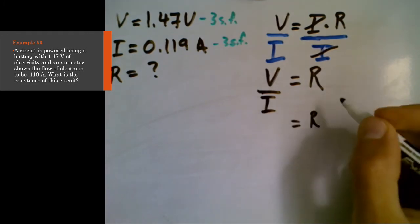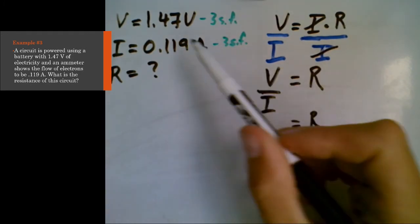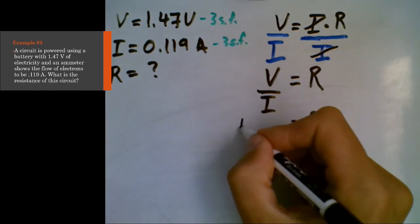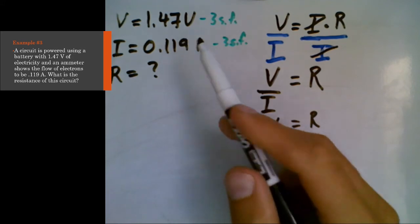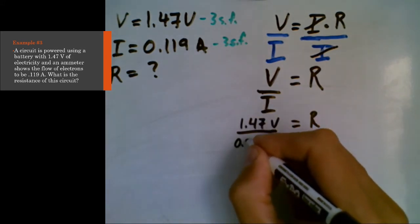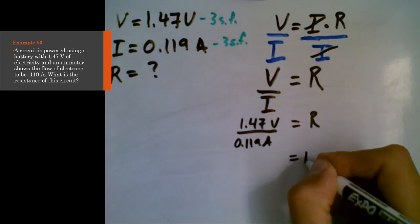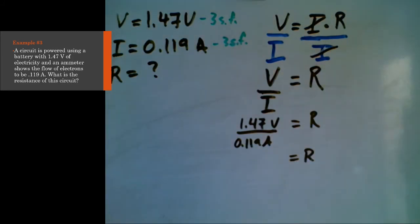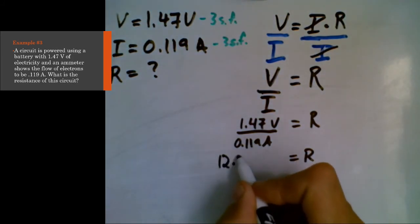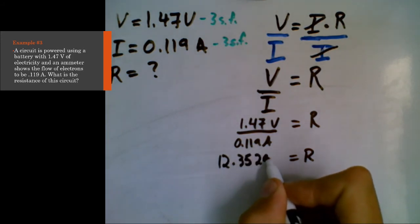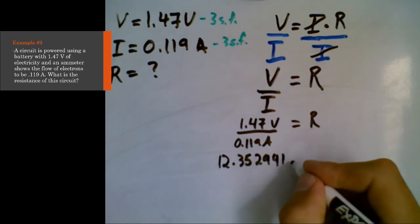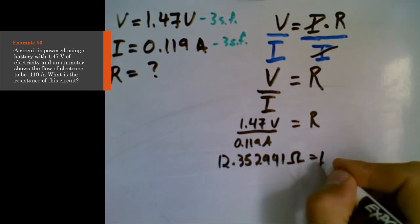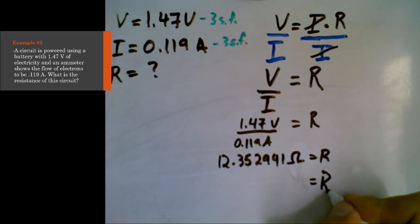So in order to solve this, V is 1.47 volts. So let's plug that in on the top, 1.47 volts divided by 0.119 amps. The resistance is going to be 12.352941, and it's going to be in ohms.